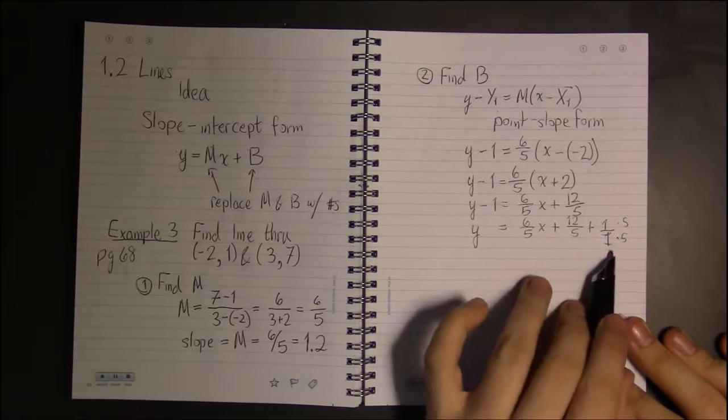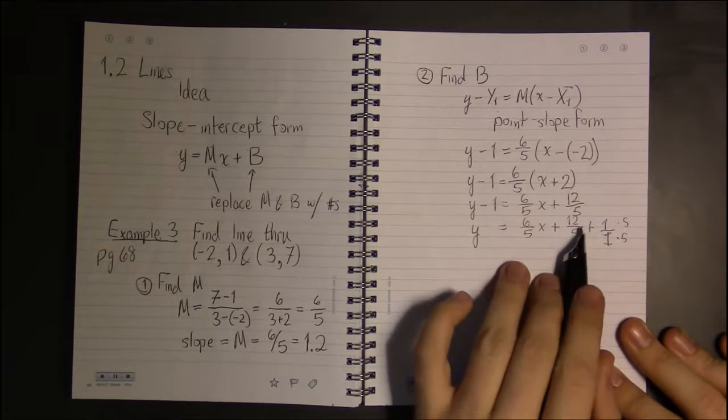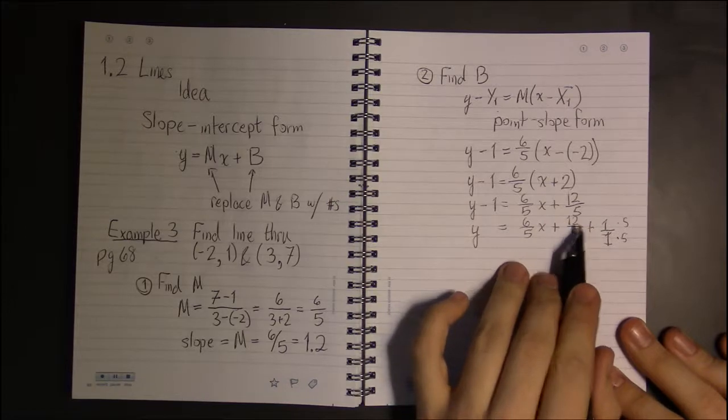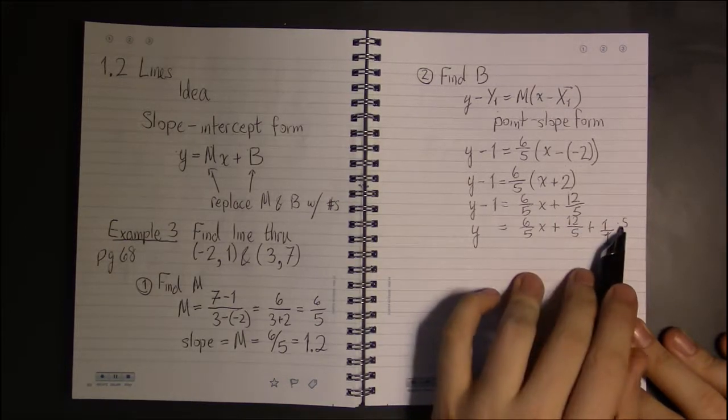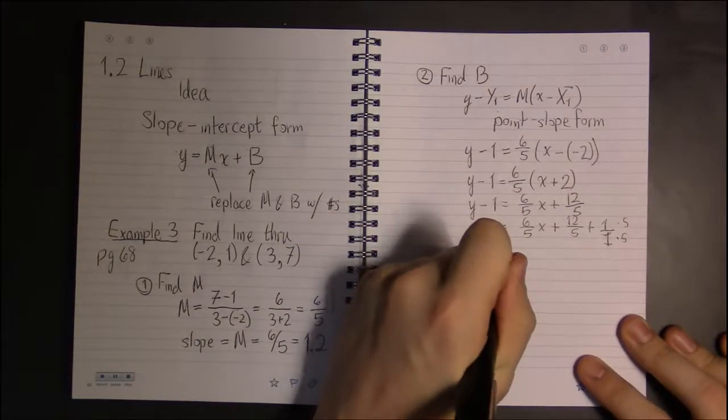So, both denominators will both be 5. So, on top, it'll be 12 plus 1 times 5. That's 12 plus 5, or 17.